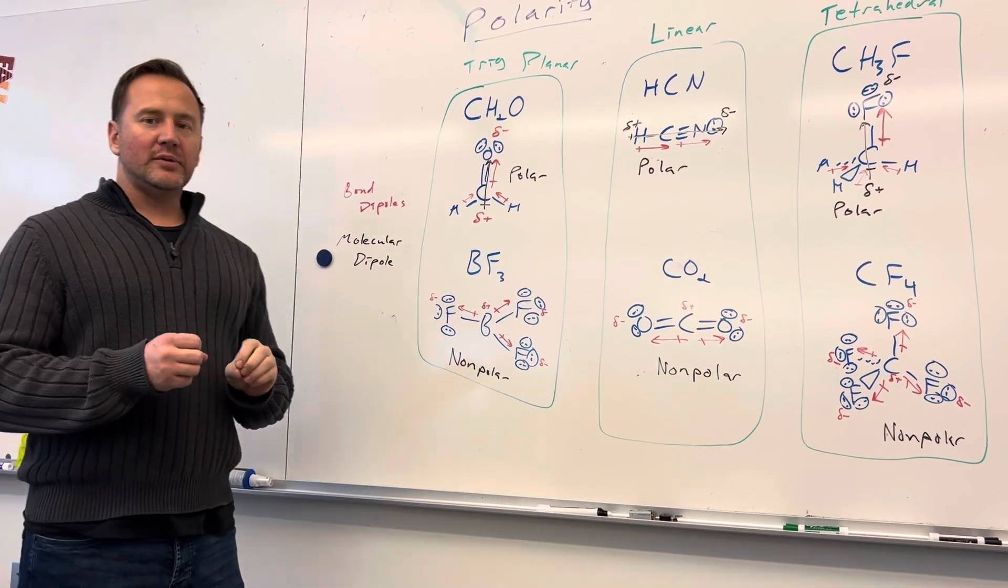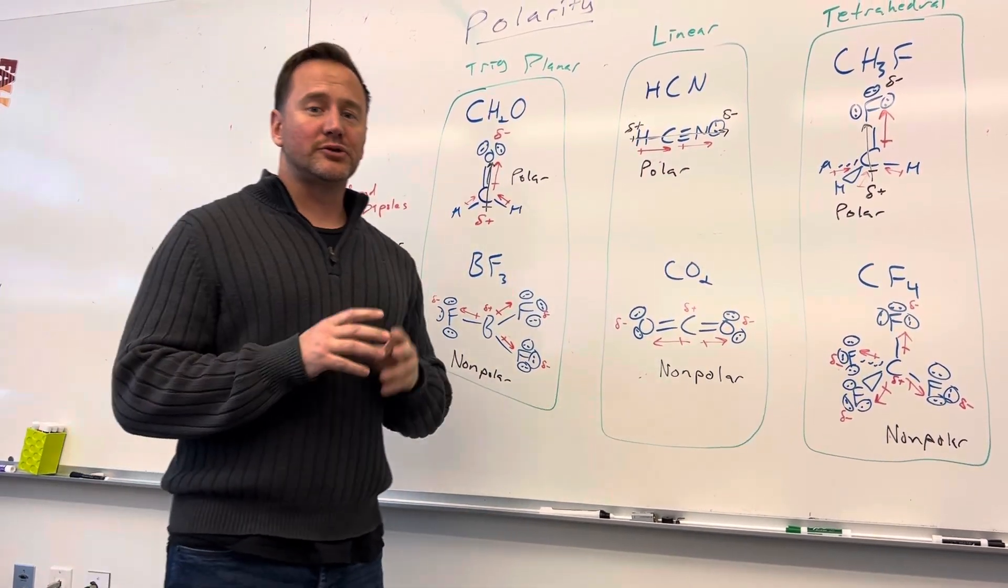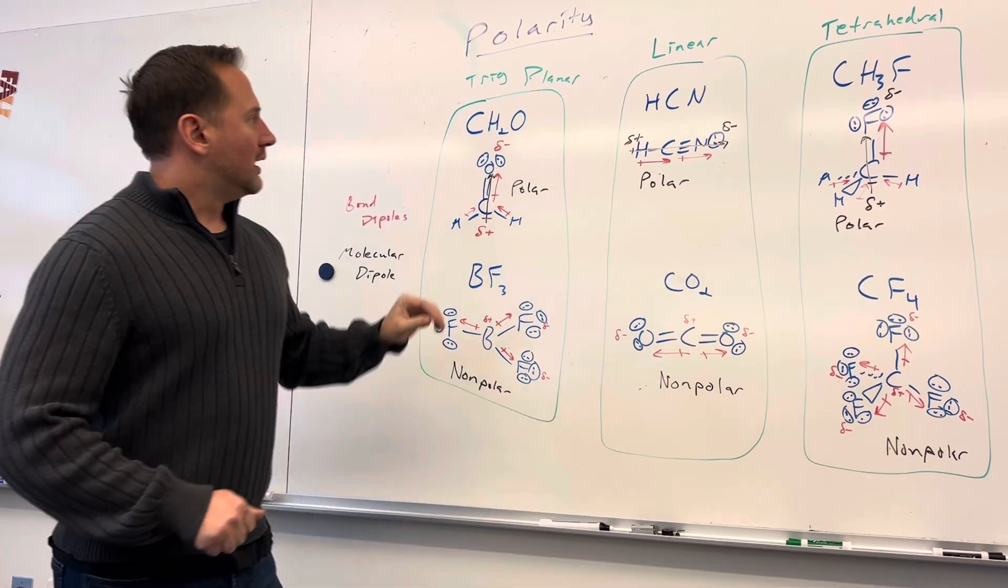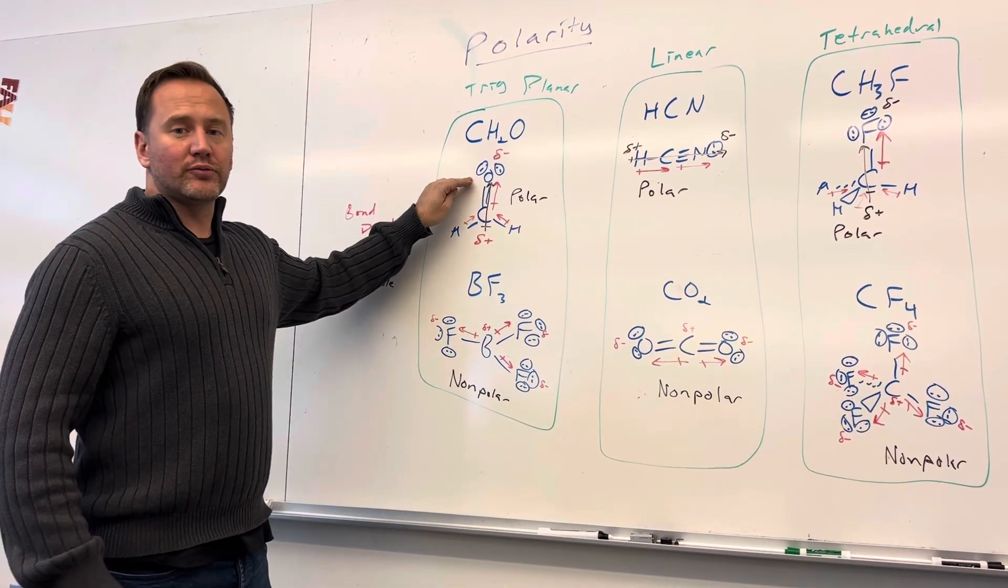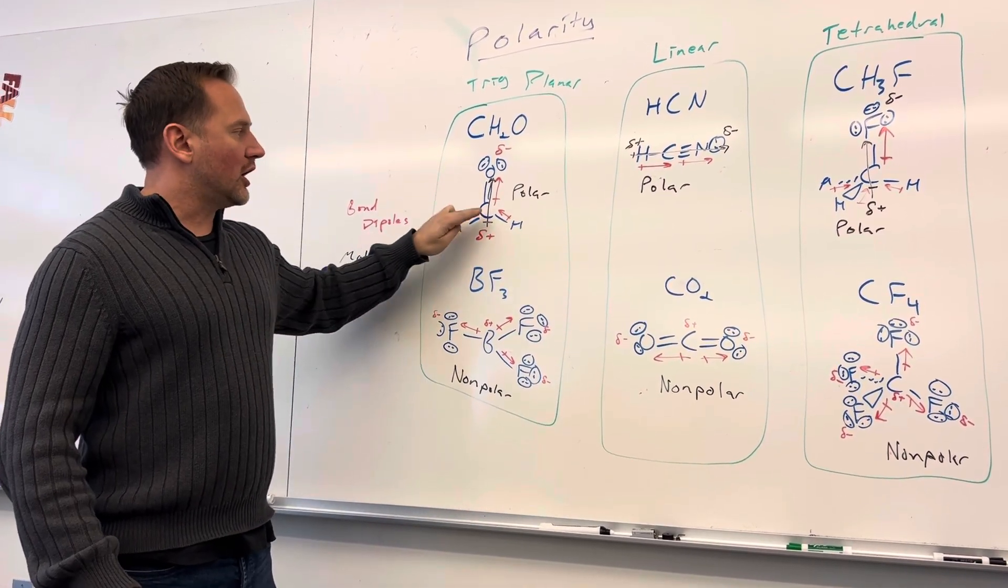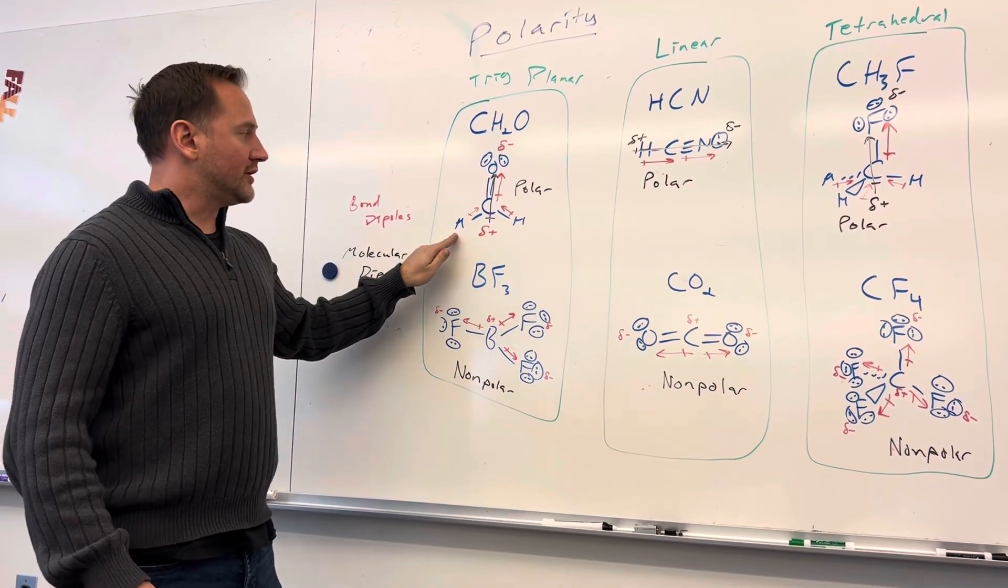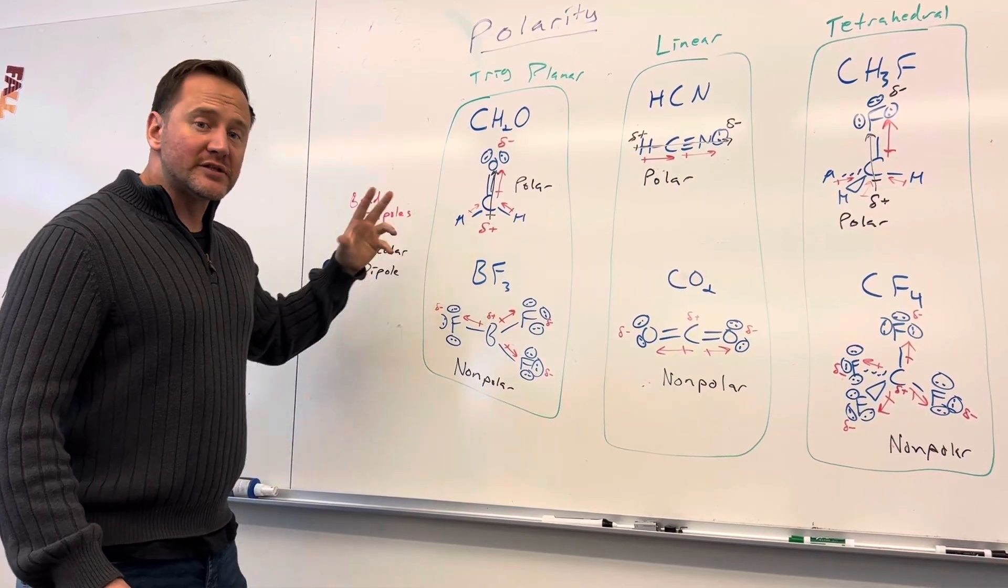So each element has its own electronegativity, or strength an atom has when attracting electrons in a bond. And oxygen has a value of 3.5, which is higher than carbon, which is 2.5, or hydrogen, which is 2.1.